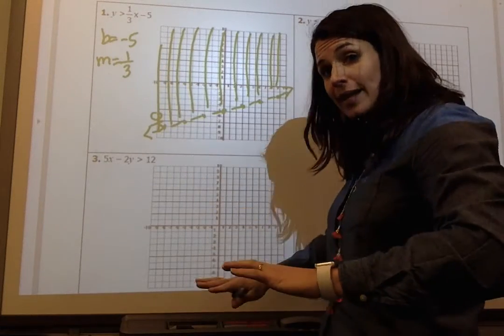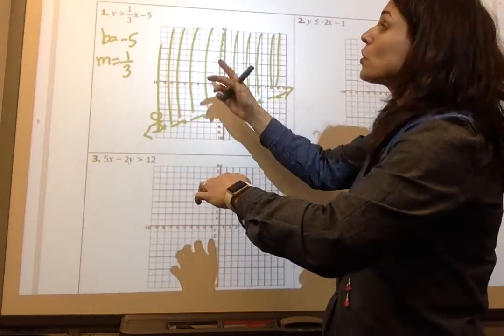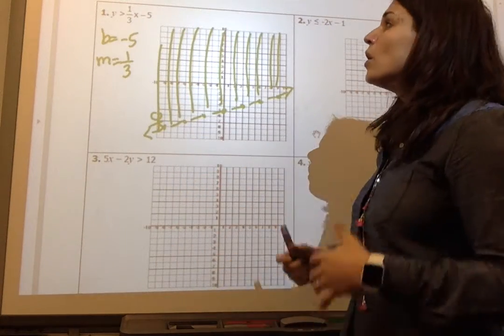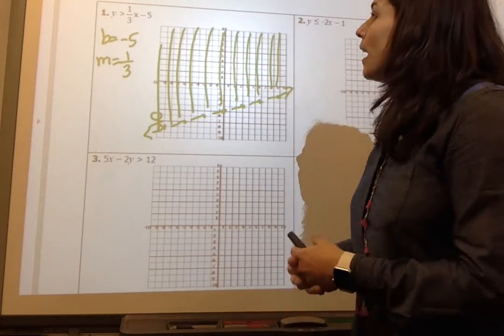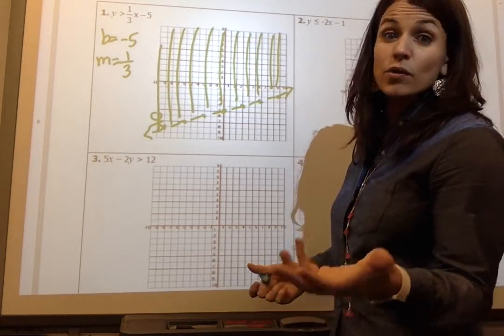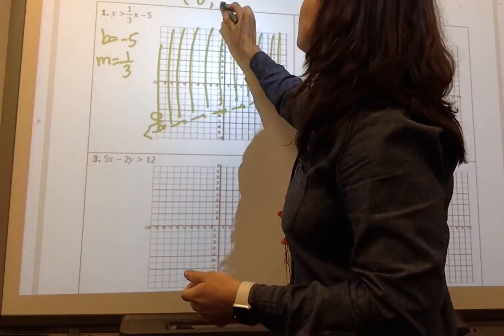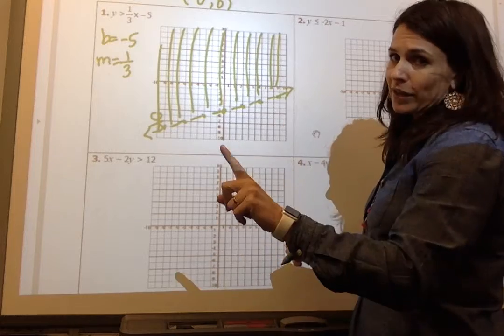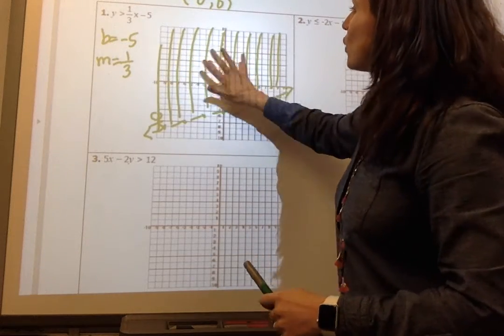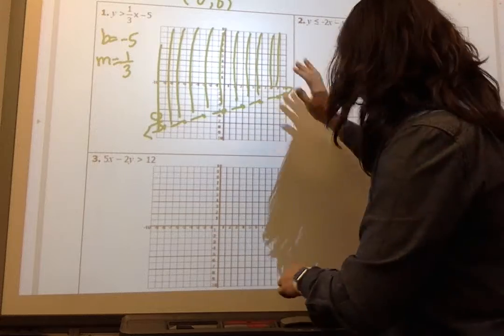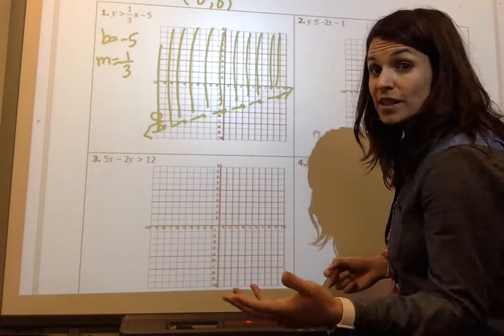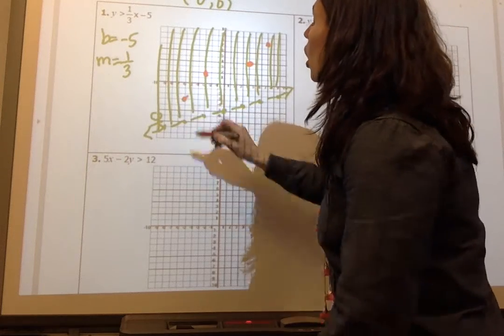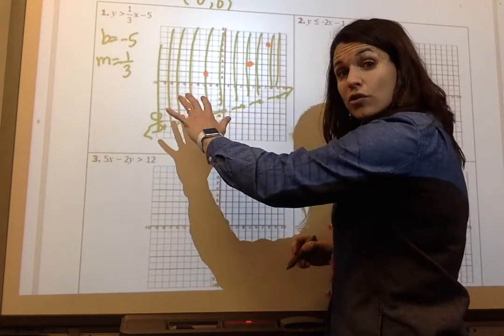If y were less than, we would shade below the skier. So greater than we shade above the skier, less than we shade below the skier. We also said in our notes that we're going to use a test point, and the easiest test point to use is (0,0), right? Because it's really easy to plug in zeros. So if I do that, well I'll do that in a second. But let's talk, now this shaded region, this means all of these points in here are solutions to this inequality. This is a solution, this is a solution, this is a solution. All of these in here are solutions to this inequality.